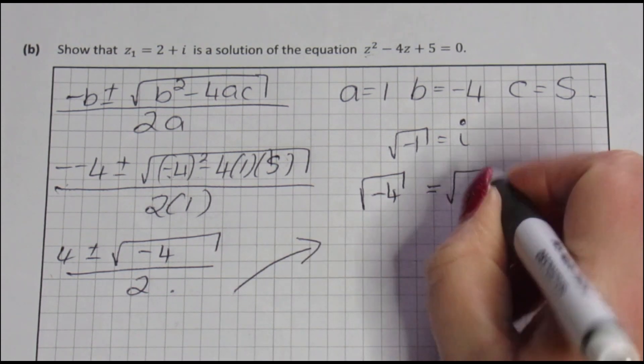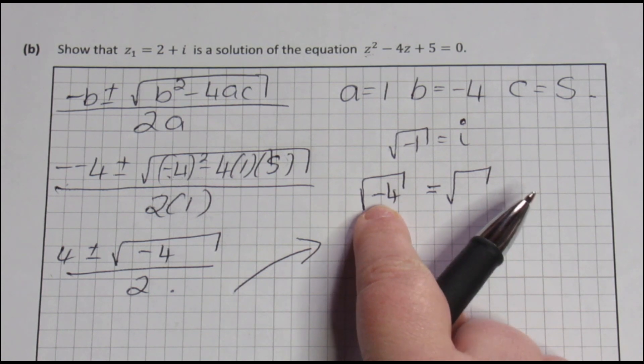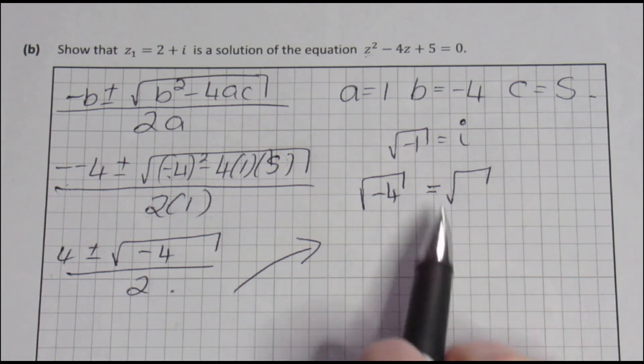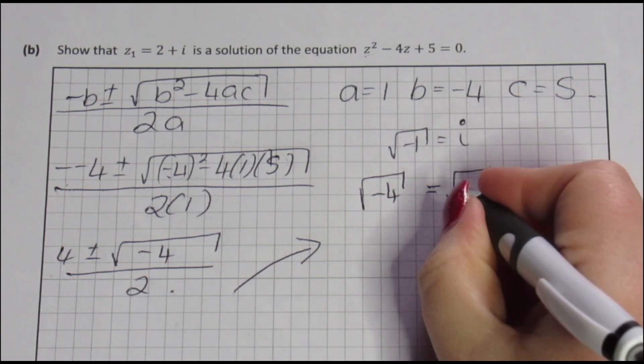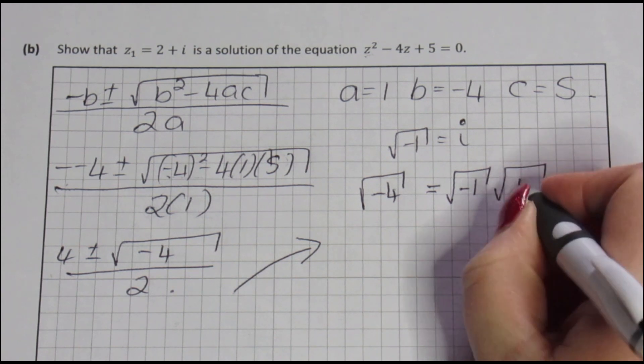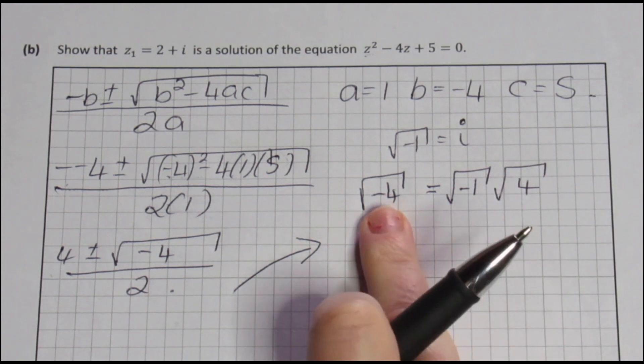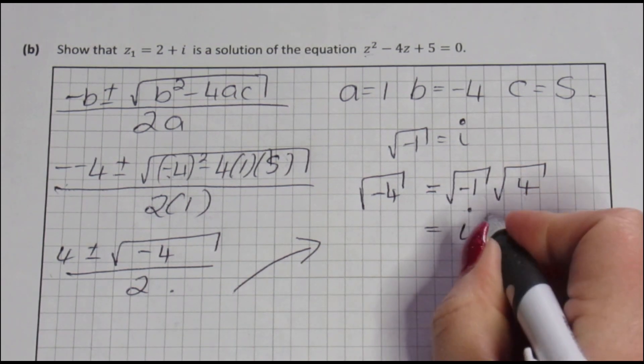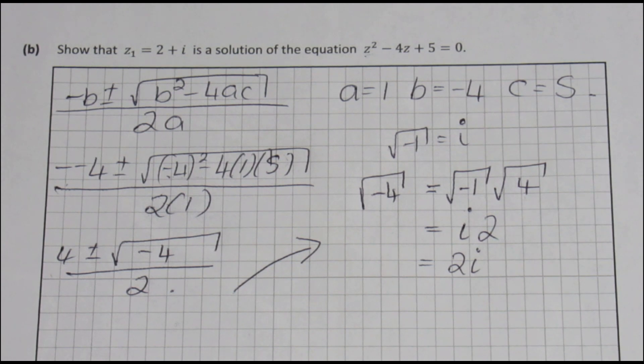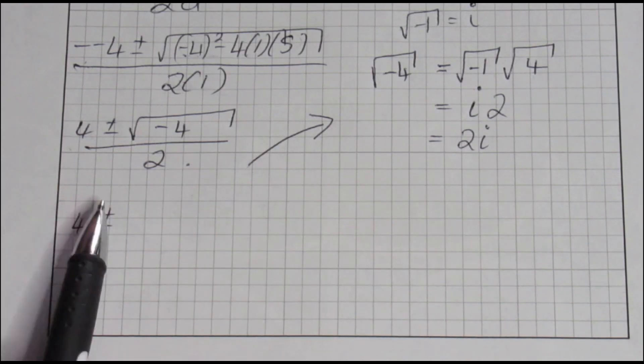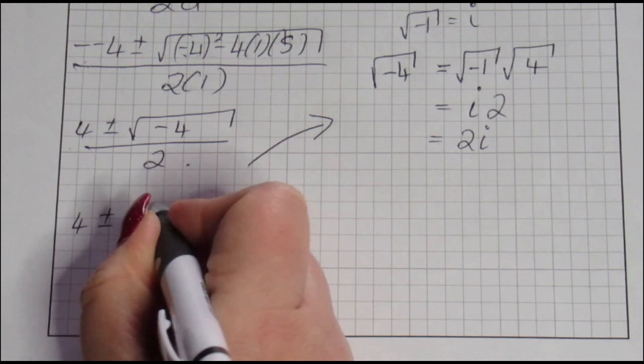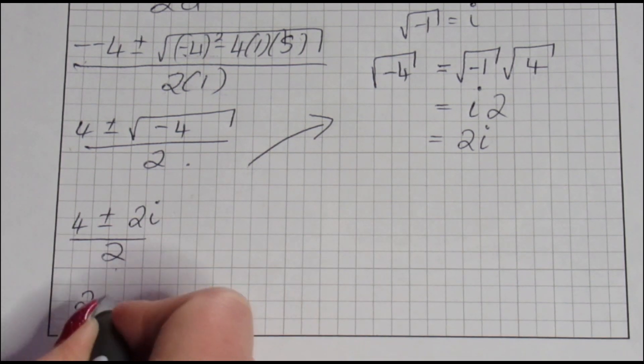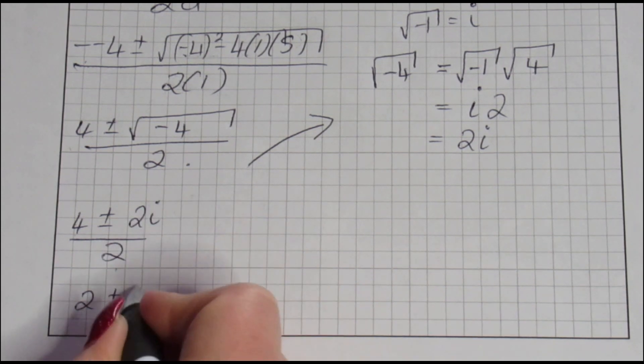So what we know about surds is we can take this number here, the minus 4, we can take the minus 4 and we can look for its factors. So because we know this fact, we're going to say that square root of minus 1 multiplied by the square root of 4 is the same as this. We now know that this gives us i and we know that this gives us 2. Rewriting it a little bit tidier, 2i. So we're now going to say plus 4 plus or minus 2i over 2. 4 divided by 2 gives me 2 and 2 divided by 2 gives me 1.